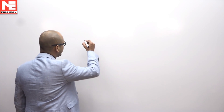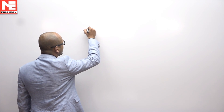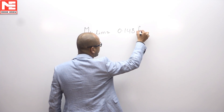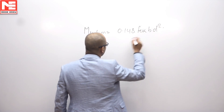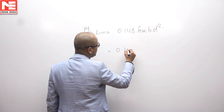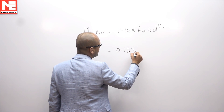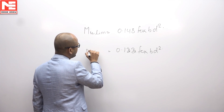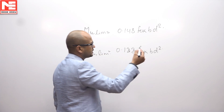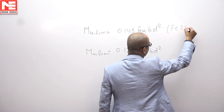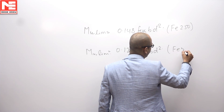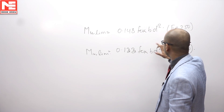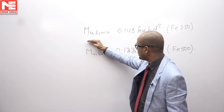Coming to statement 3: from the limit state method we know MU limiting is equal to 0.148 fck bd² and it would be 0.133 fck bd². From both expressions we can calculate the depth requirement for a balance section. The value 0.148 corresponds to Fe 250 and 0.133 corresponds to Fe 500. While calculating d from these expressions, d will be on one side and this value will be in the denominator.